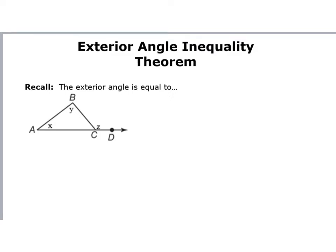Hi mathematicians! Today we're going to be looking at the Exterior Angle Inequality Theorem. Before, we had already looked at what an exterior angle is. For example, angle Z is outside, made by extending one side. So Z has a value of an exterior angle that is outside my triangle.